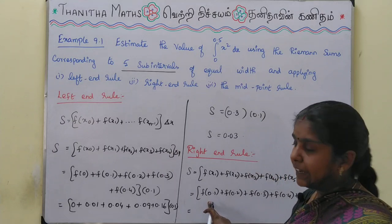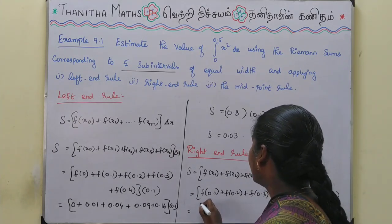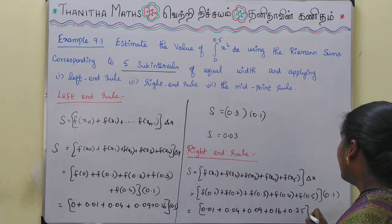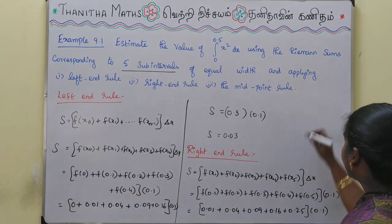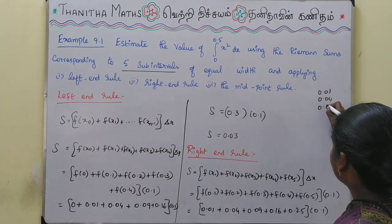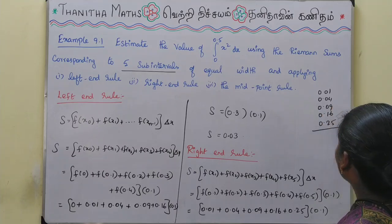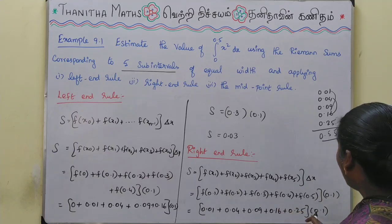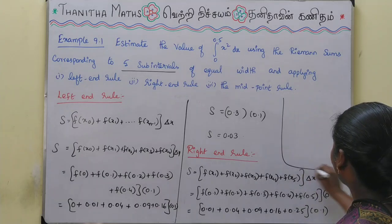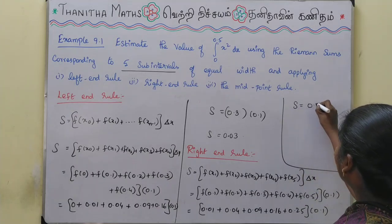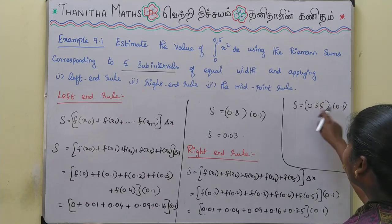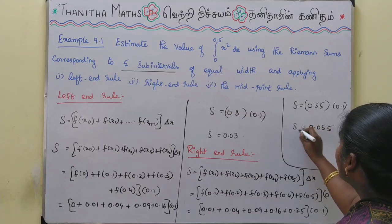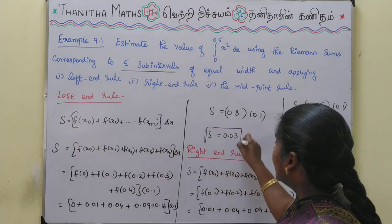Adding the values for the right-end rule: 0.01 + 0.04 + 0.09 + 0.16 + 0.25 = 0.55. Then multiplying by 0.1: 0.55 × 0.1 = 0.055. So the answer for the right-end rule is 0.055.